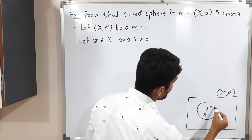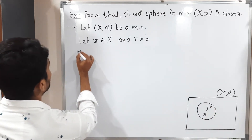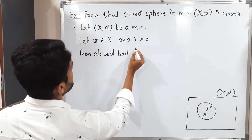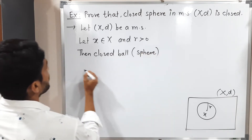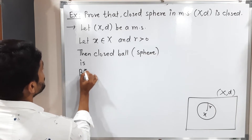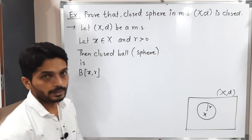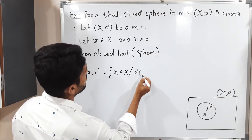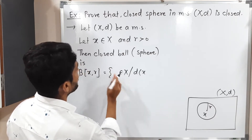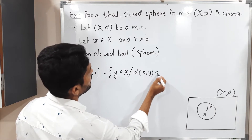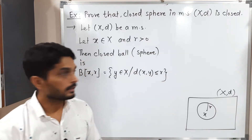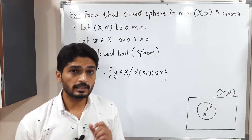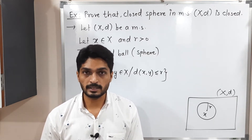So we will have a closed ball. The closed ball — which is the same as the closed sphere — we denote as B(X, R), and its definition is: the set of all Y belonging to X such that d(X, Y) ≤ R. In an open ball we have strictly less than R, but in a closed ball we have less than or equal to R. So this is the closed ball and we have to prove it is a closed set in metric space (X, d).